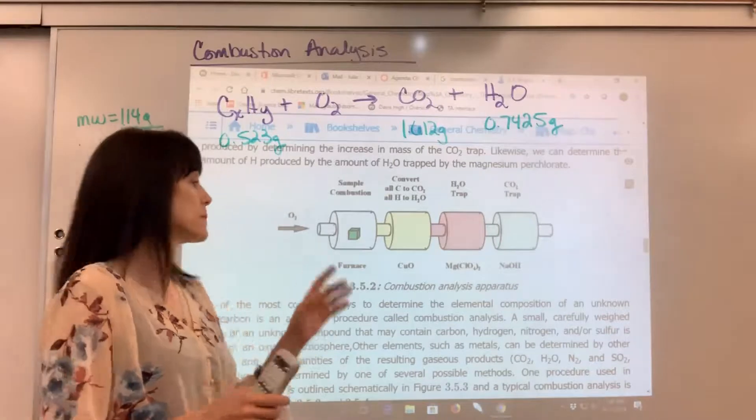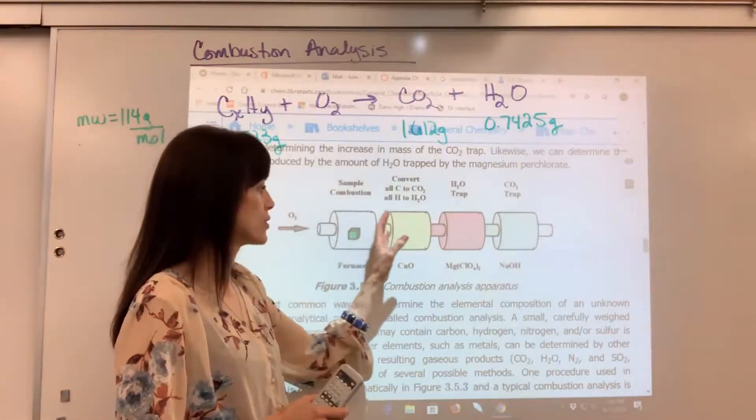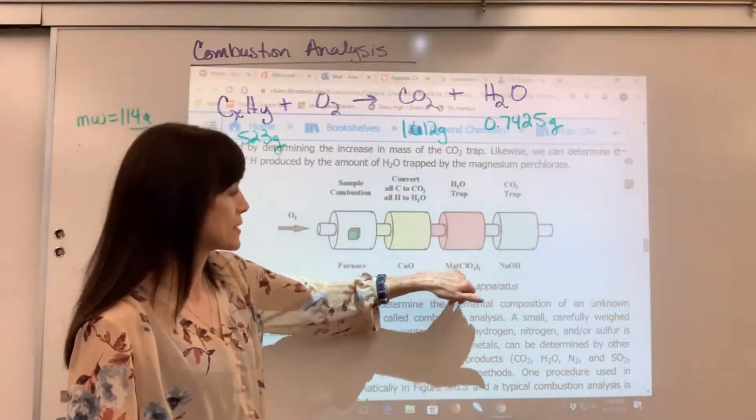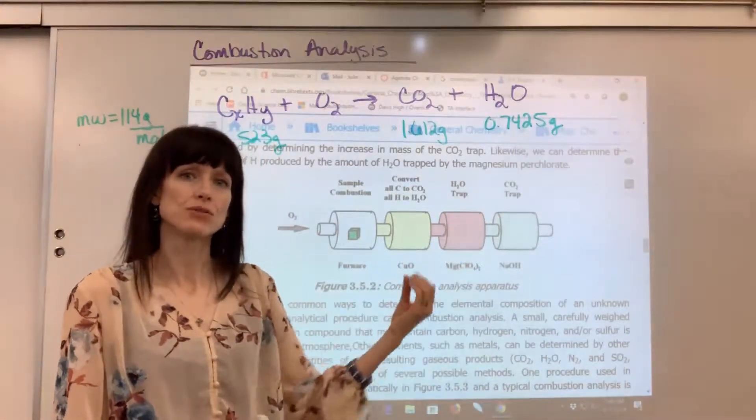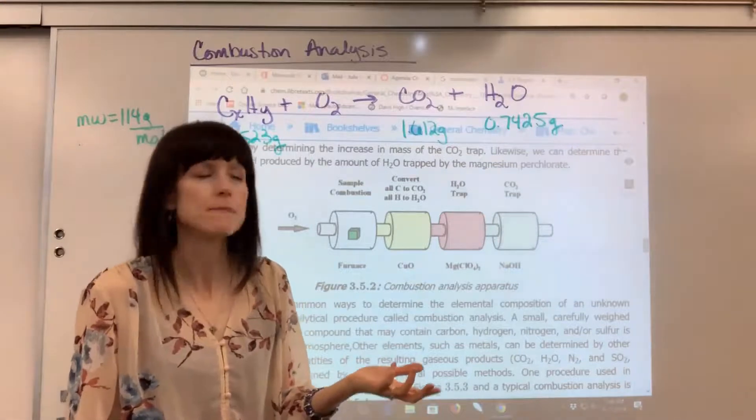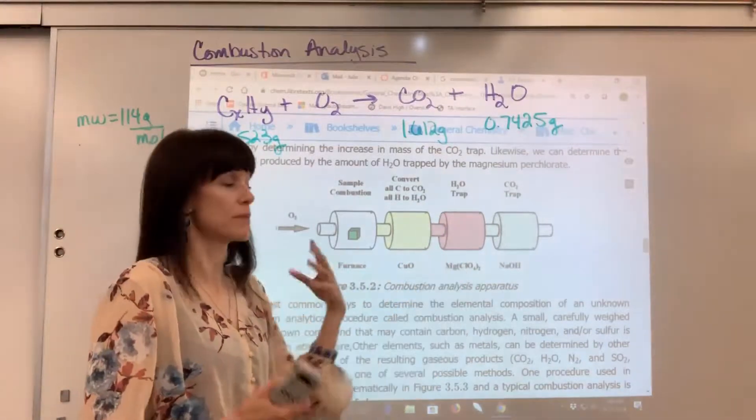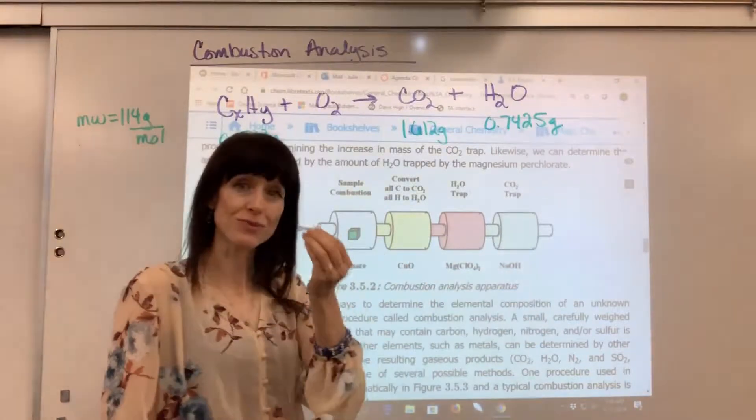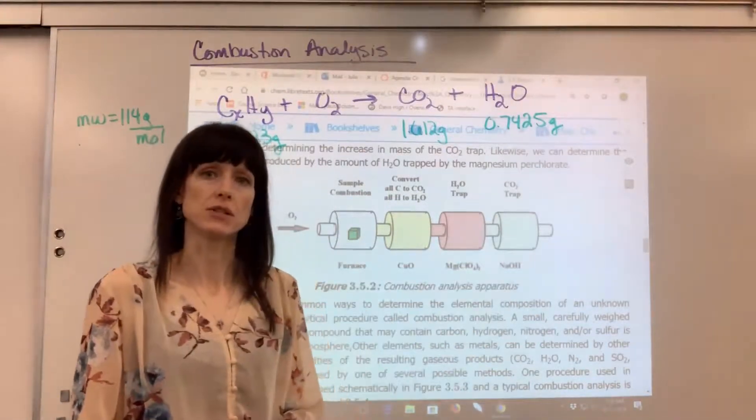Now here's the clever part. As this combustion reaction happens, the water and CO2 will pass through traps. This first trap is the perchlorate. It's an absorbent that's going to trap the water. And then sodium hydroxide, a really fine powder, is going to trap the CO2.